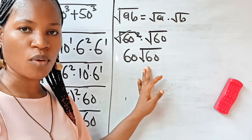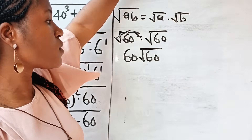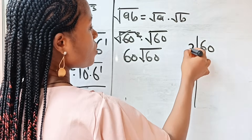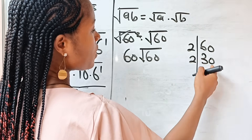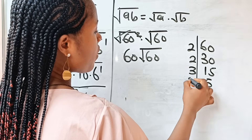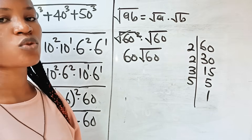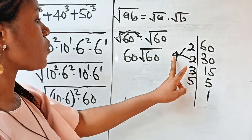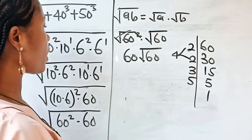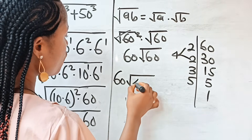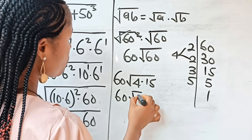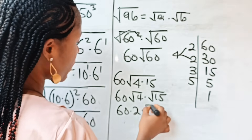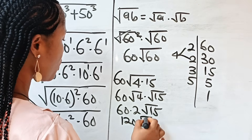To simplify root 60, the smallest factor of 60 is 2, giving us 30. The smallest factor of 30 is still 2, giving us 15. Then 3 divides to give us 5, and 5 divides to give us 1. Because this is a square root, we pick identical numbers in pairs. The only pair we have is two 2s, so 2 times 2 is 4. That means we can express root 60 as root 4 times root 15. So we have 60 times root 4 times root 15, which gives us 60 times 2 times root 15, since root 4 is 2.